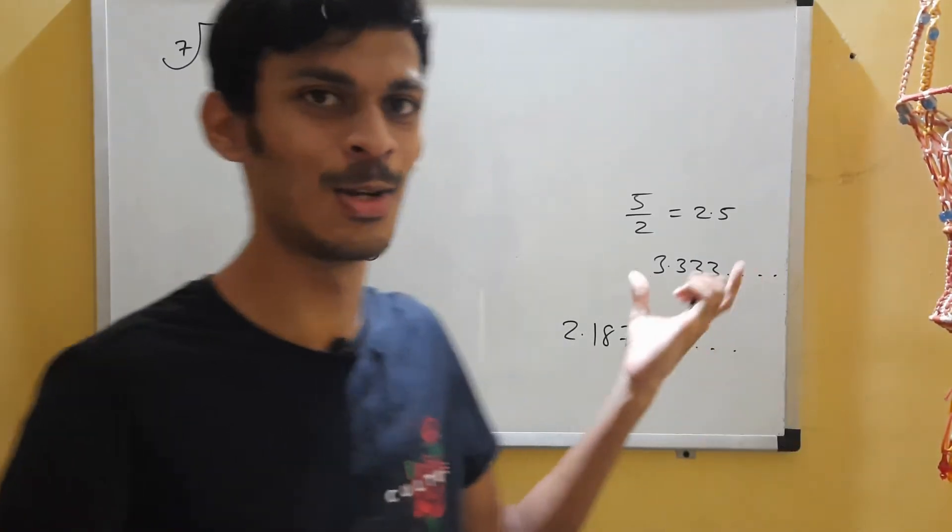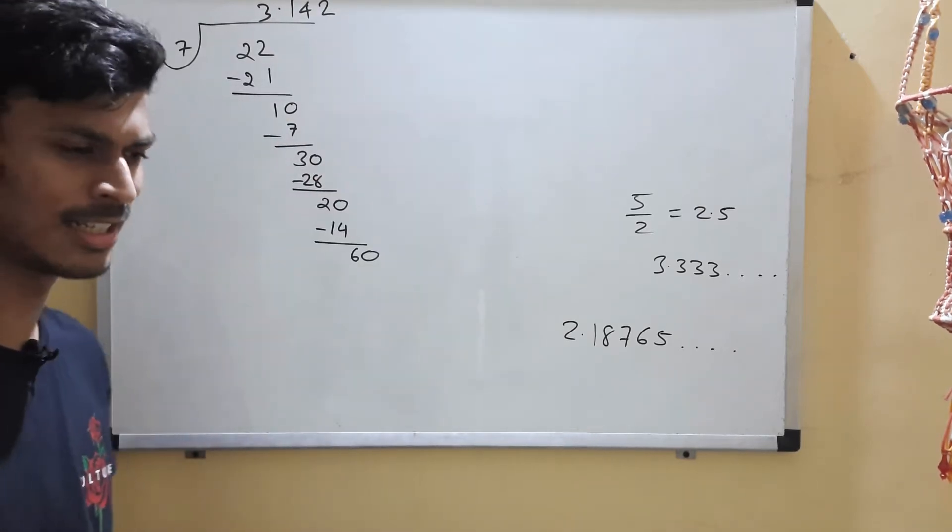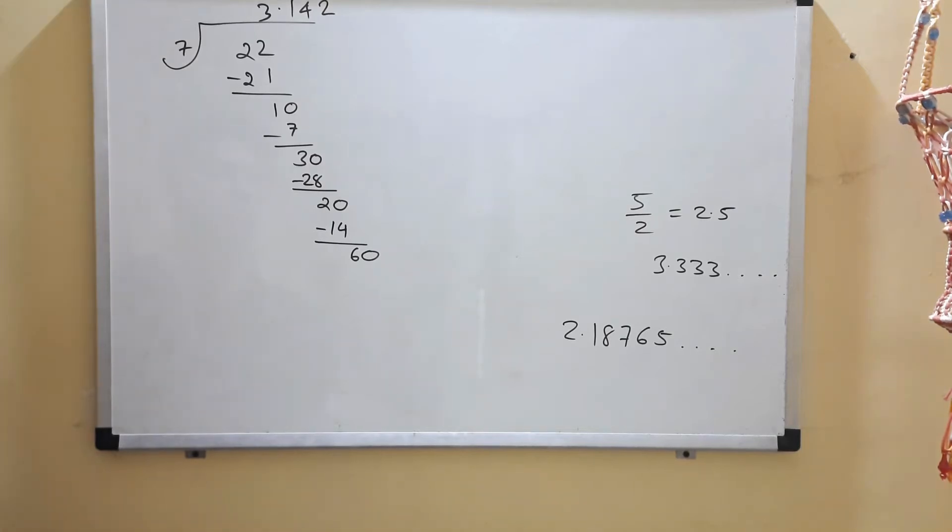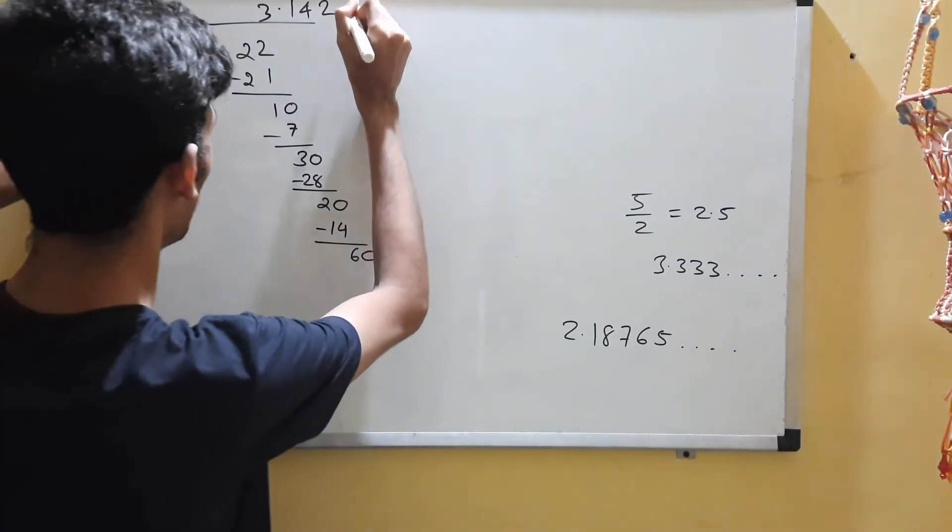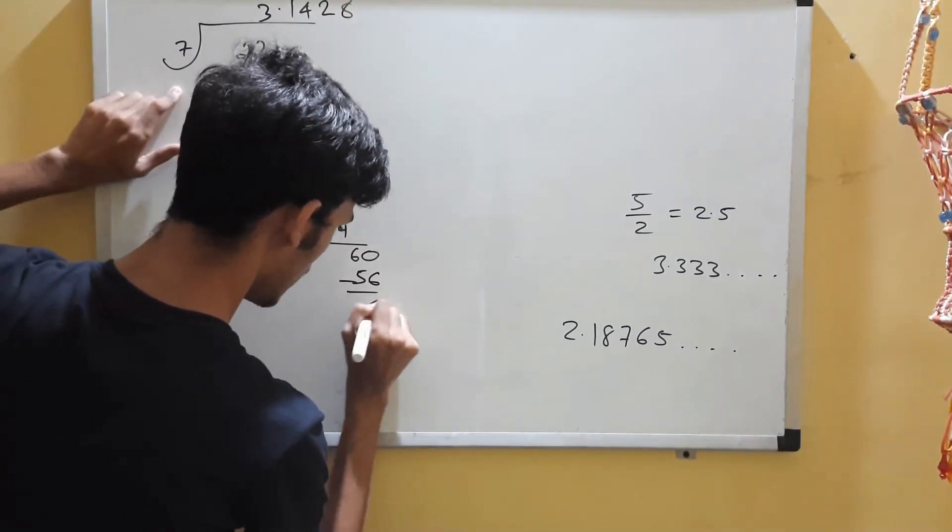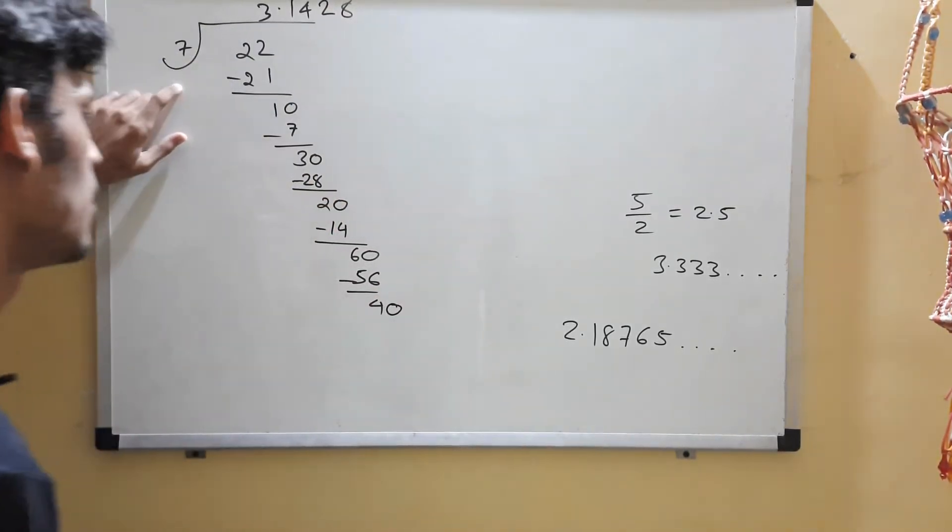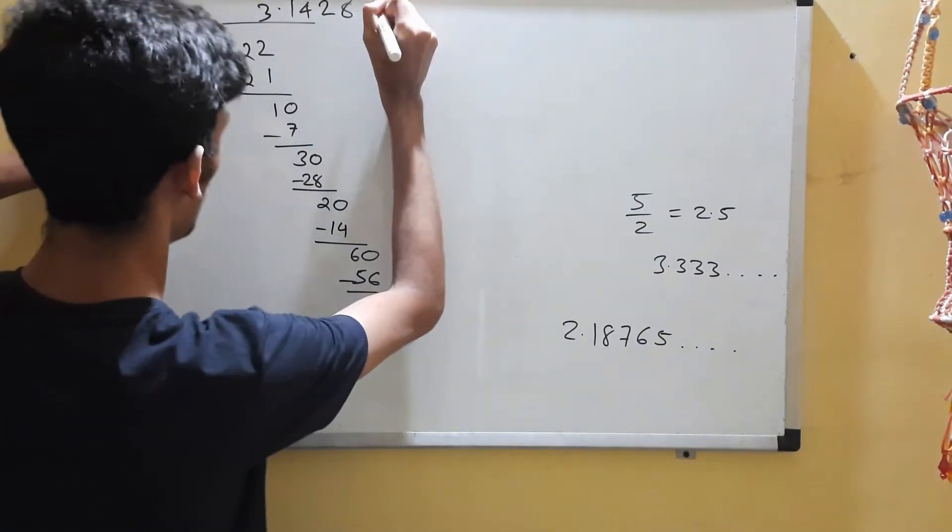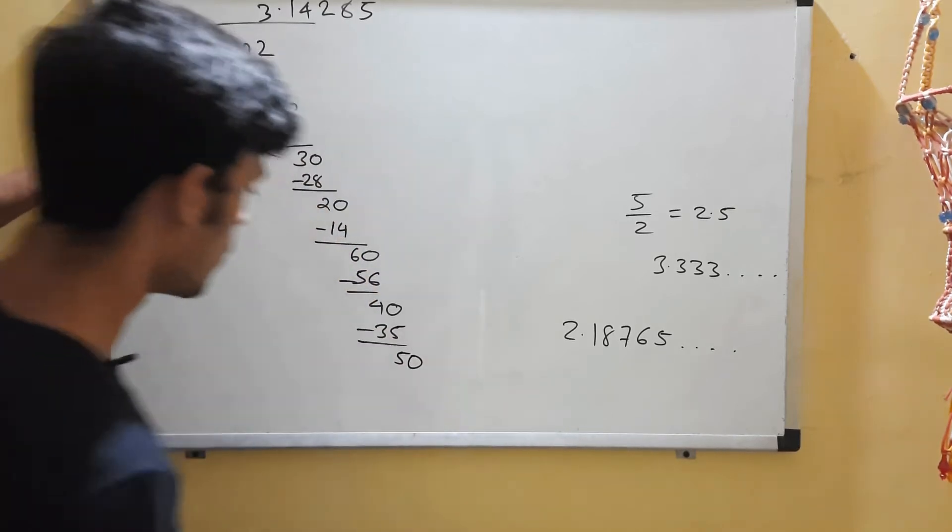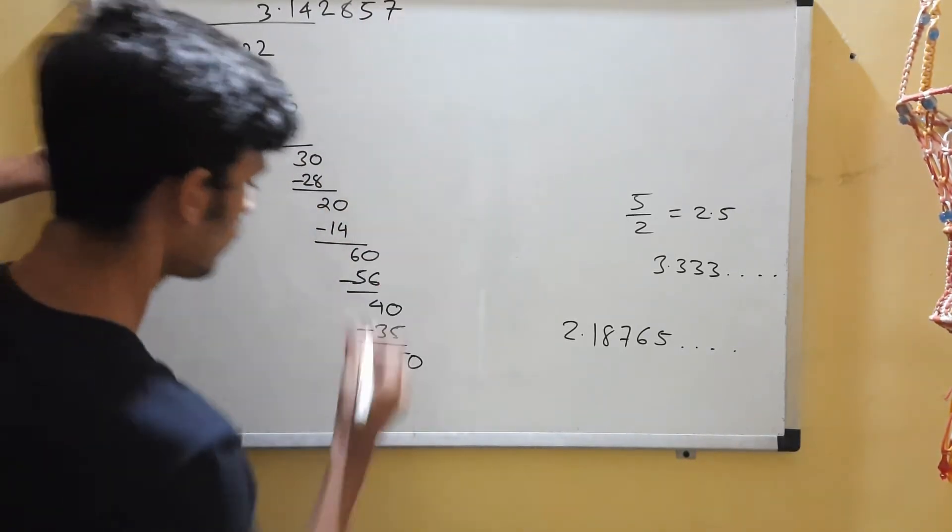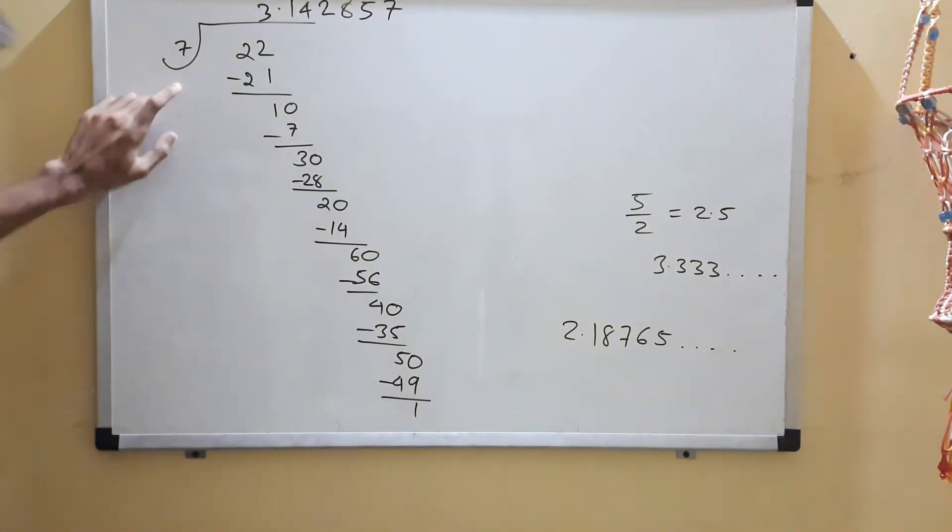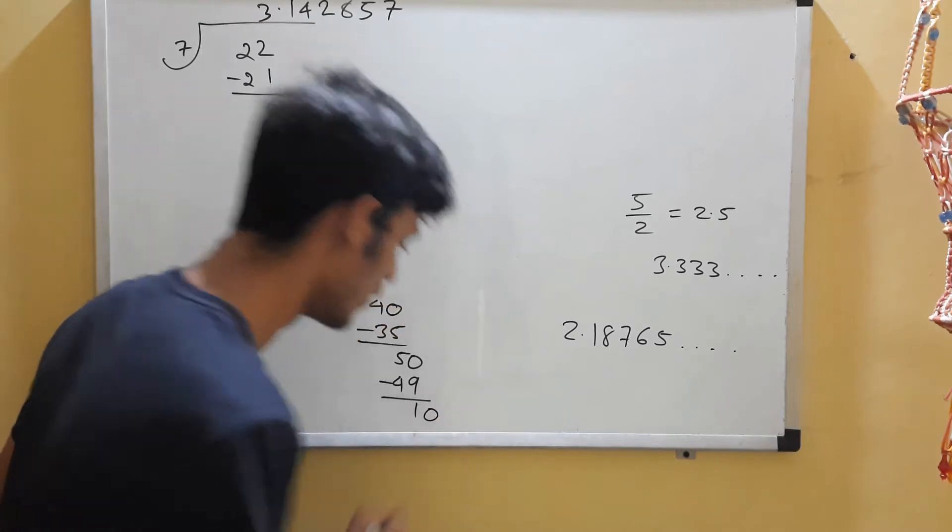Let's continue. 6 times 7 is 42. You get 5. Add a zero. 7 fives are 35. 7 sevens are 49. Now here you can note an amazing thing - you get 10 again.